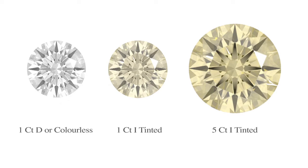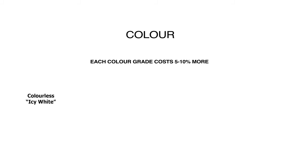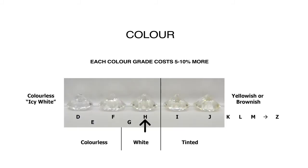The five carat I is yellower than the one carat I. At Holloway Diamonds, all our diamonds are H or better colour, and in very large stones we start at G up.